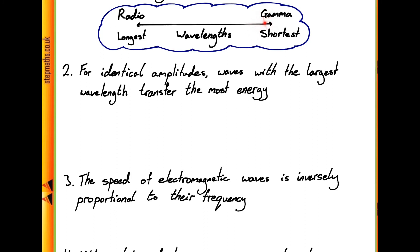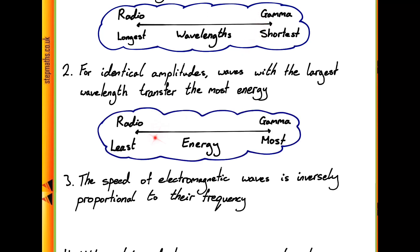Now one thing you might think about gamma actually in particular, and this end of the spectrum which has like x-rays in it for example, is that they're really high energy radiation. So actually this spectrum is going to go from the least energy up to the most energy. Wavelength is actually inversely proportional to energy.